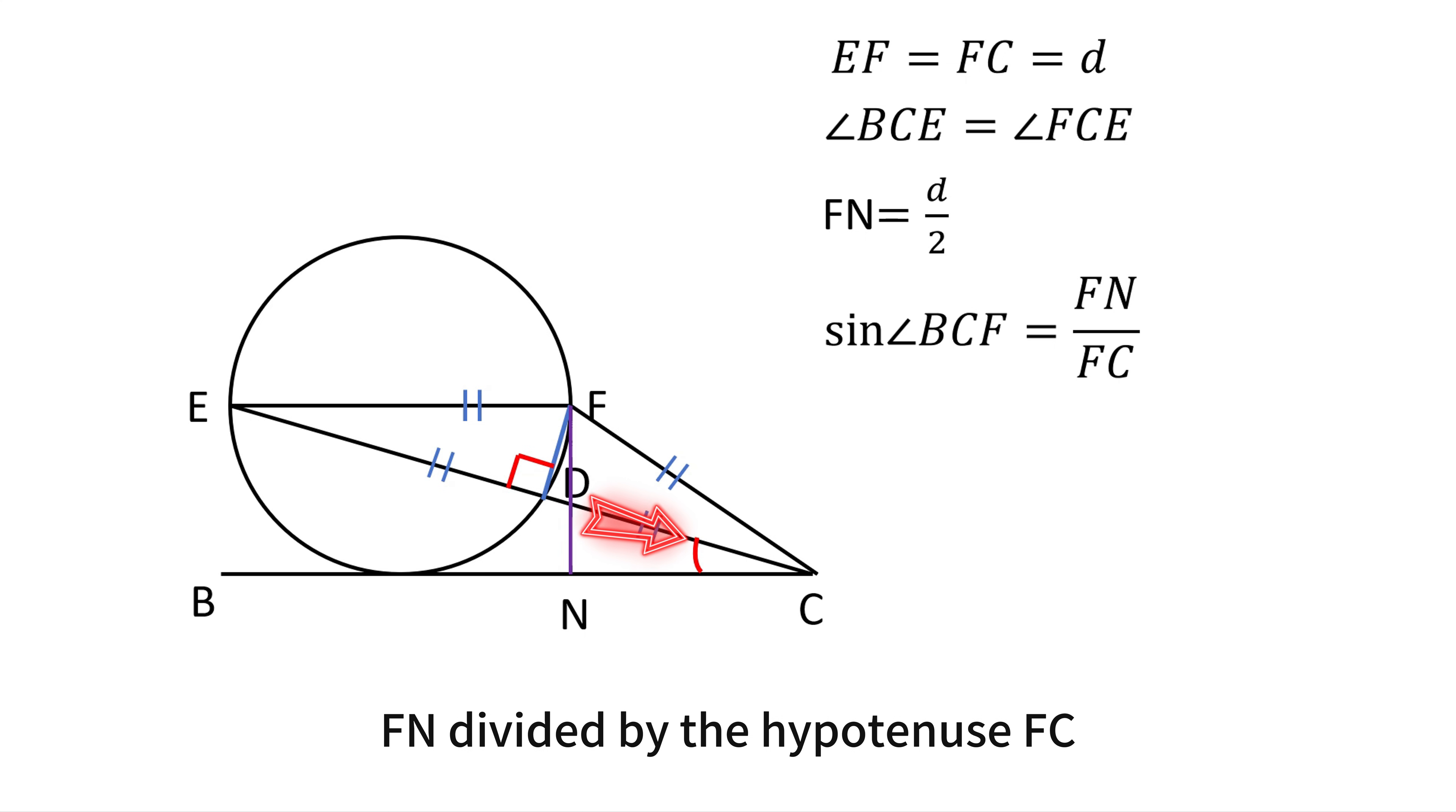This gives sine of angle BCF equals D over 2 divided by D, which simplifies to 1 half. Therefore, angle BCF measures 30 degrees.